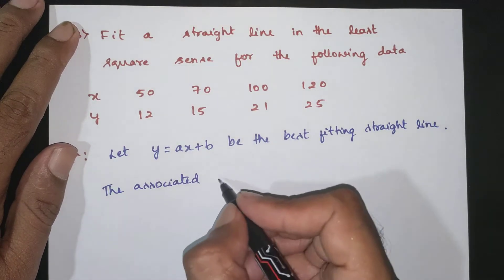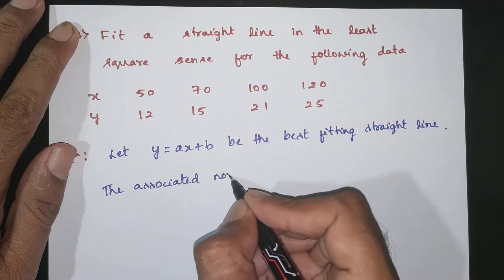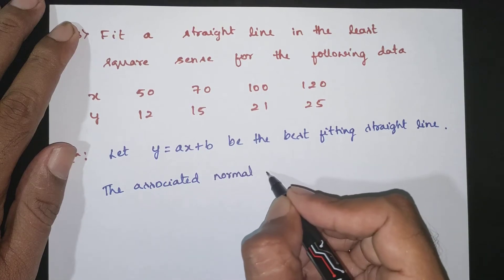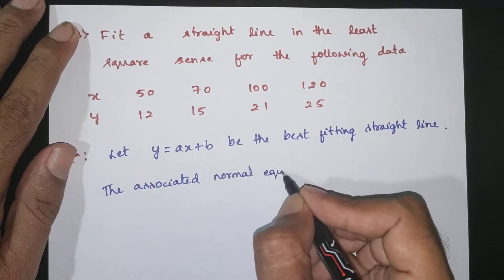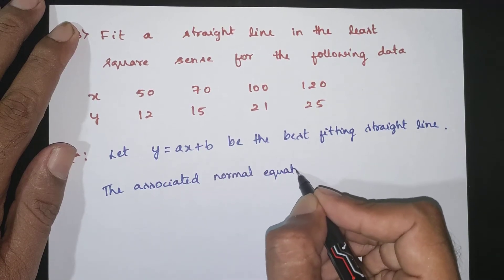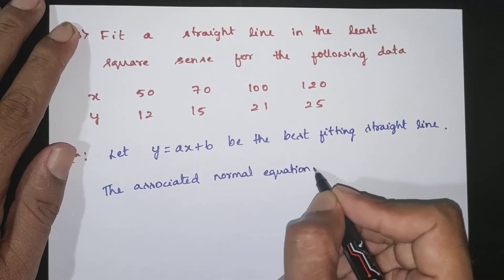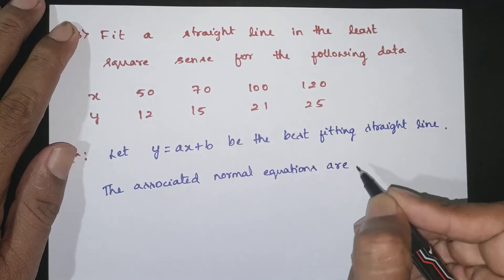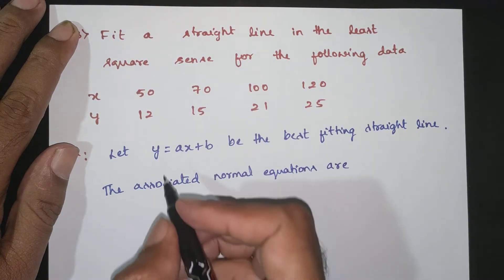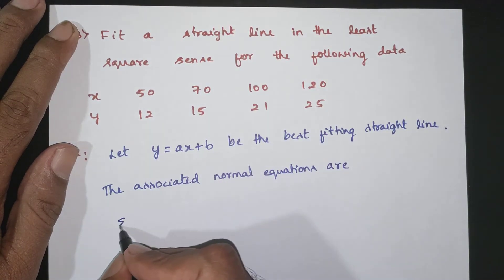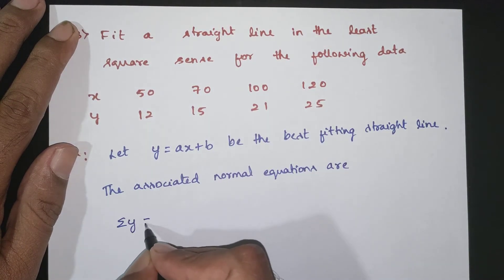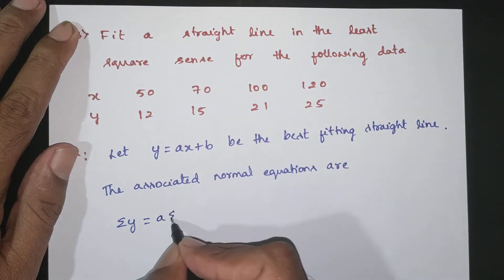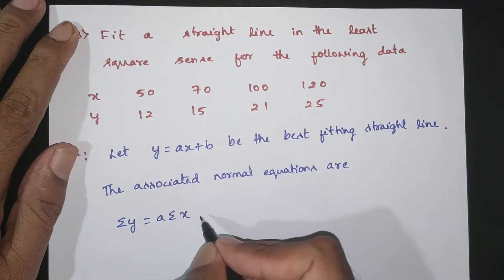The normal equations are: summation of Y, A times summation of X.